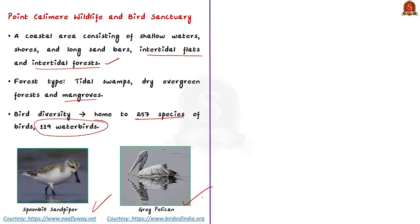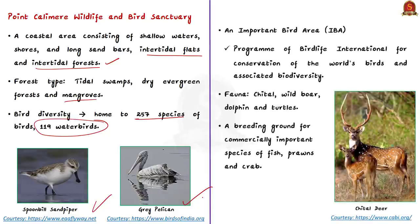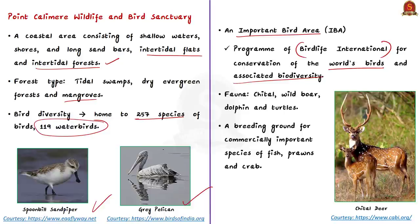Because of this, Point Kalamir is one of the important bird areas in India. The Important Bird Areas program is a program of BirdLife International. It aims to identify, monitor and protect a global network of important bird areas for conservation of the world's birds and their associated biodiversity. Point Kalamir is famous for its flamingos and also for the blackbuck. Other mammals found there include cheetah and wild boar.